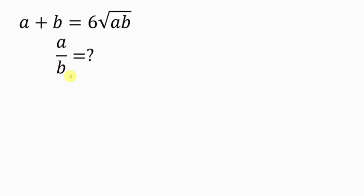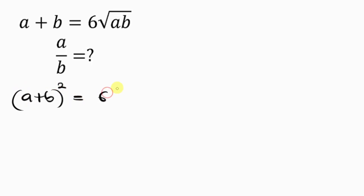Our first step towards solving this question will be to remove this radical, and we do that by taking the square of both sides. So I have a plus b raised to the power of 2, equal to 6 times the square root of ab, raised to the power of 2.